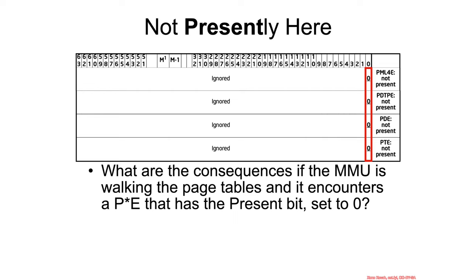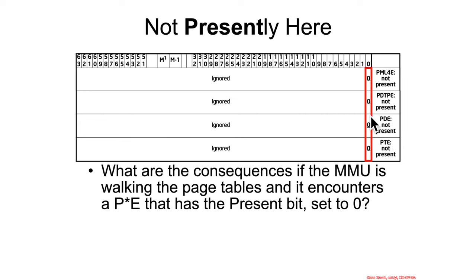Previously, when we were examining the page table entries — the various things at level 4, 3, 2, and 1 — we left off, for the most part, the consideration of the case where the present bit is set to 0, because we said the MMU doesn't try to parse any further bits out of the entry in that case. So what really happens if someone attempts to access a linear address, the MMU does the table walk, and it comes across an entry that has present equal to 0.